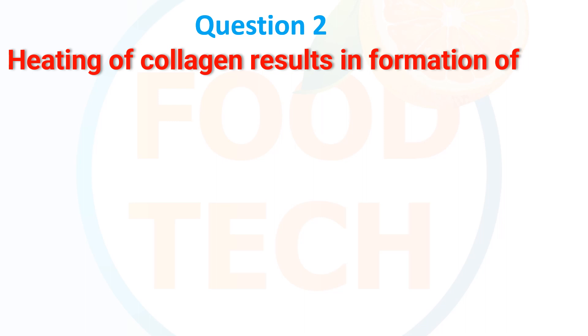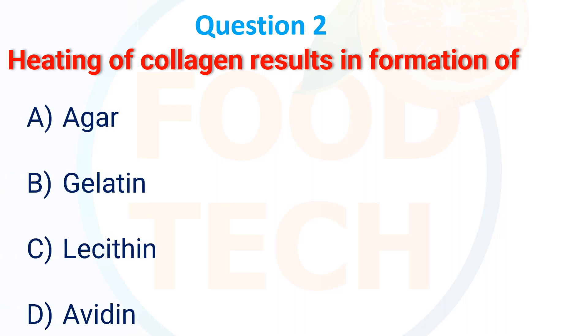Heating of collagen results in the formation of: A. Agar, B. Gelatin, C. Lecithin, D. Iodine. The answer is B. Gelatin.